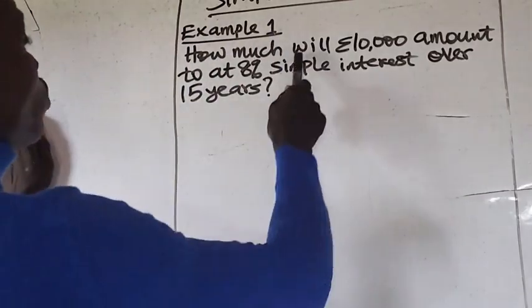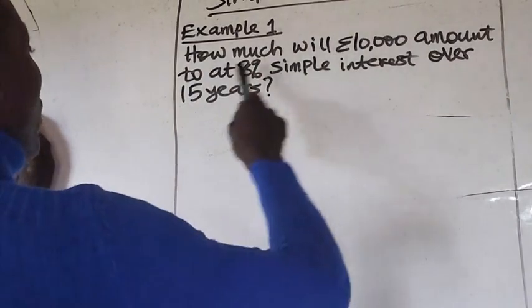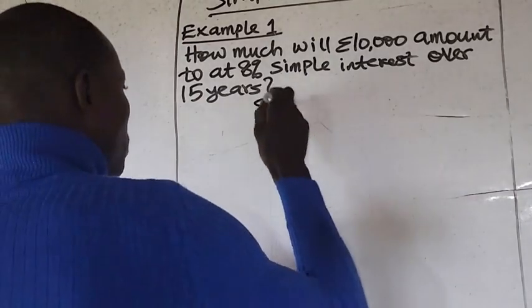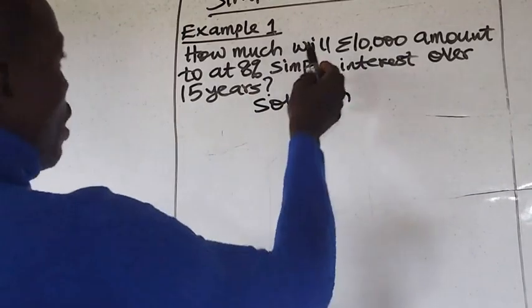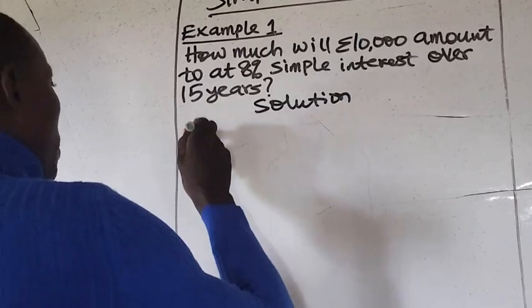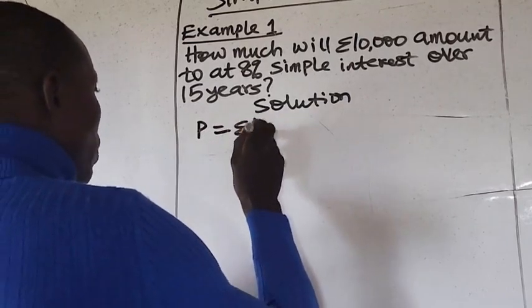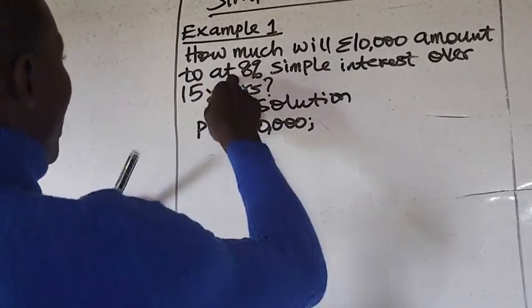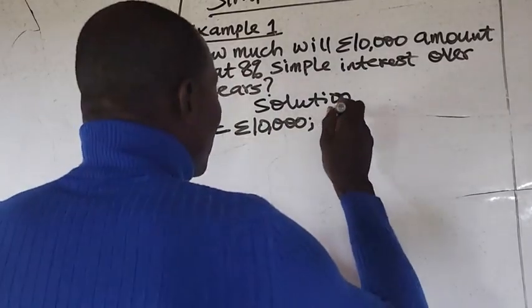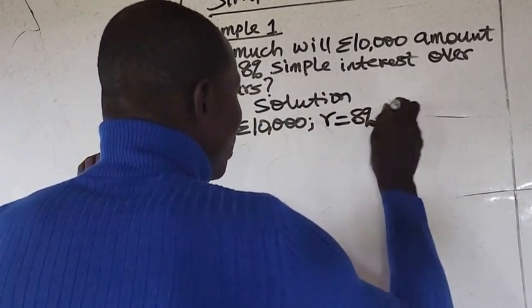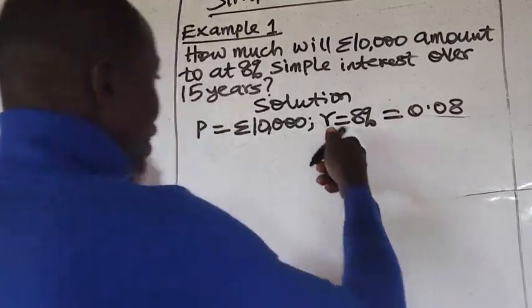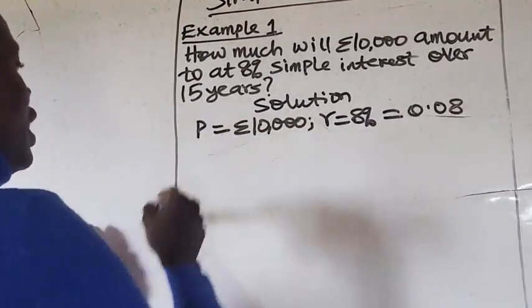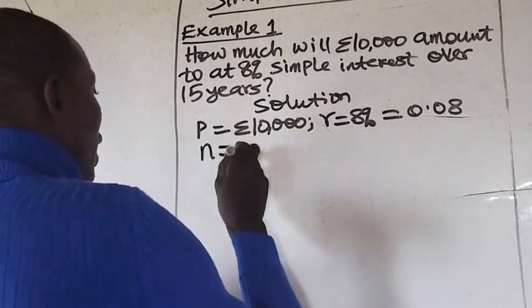Example 1: How much will £10,000 amount to at 8% simple interest over 15 years? The £10,000 is the original sum invested, so P = £10,000. The rate of interest R = 8% = 0.08 (that is 8 divided by 100). The time period N = 15 years.